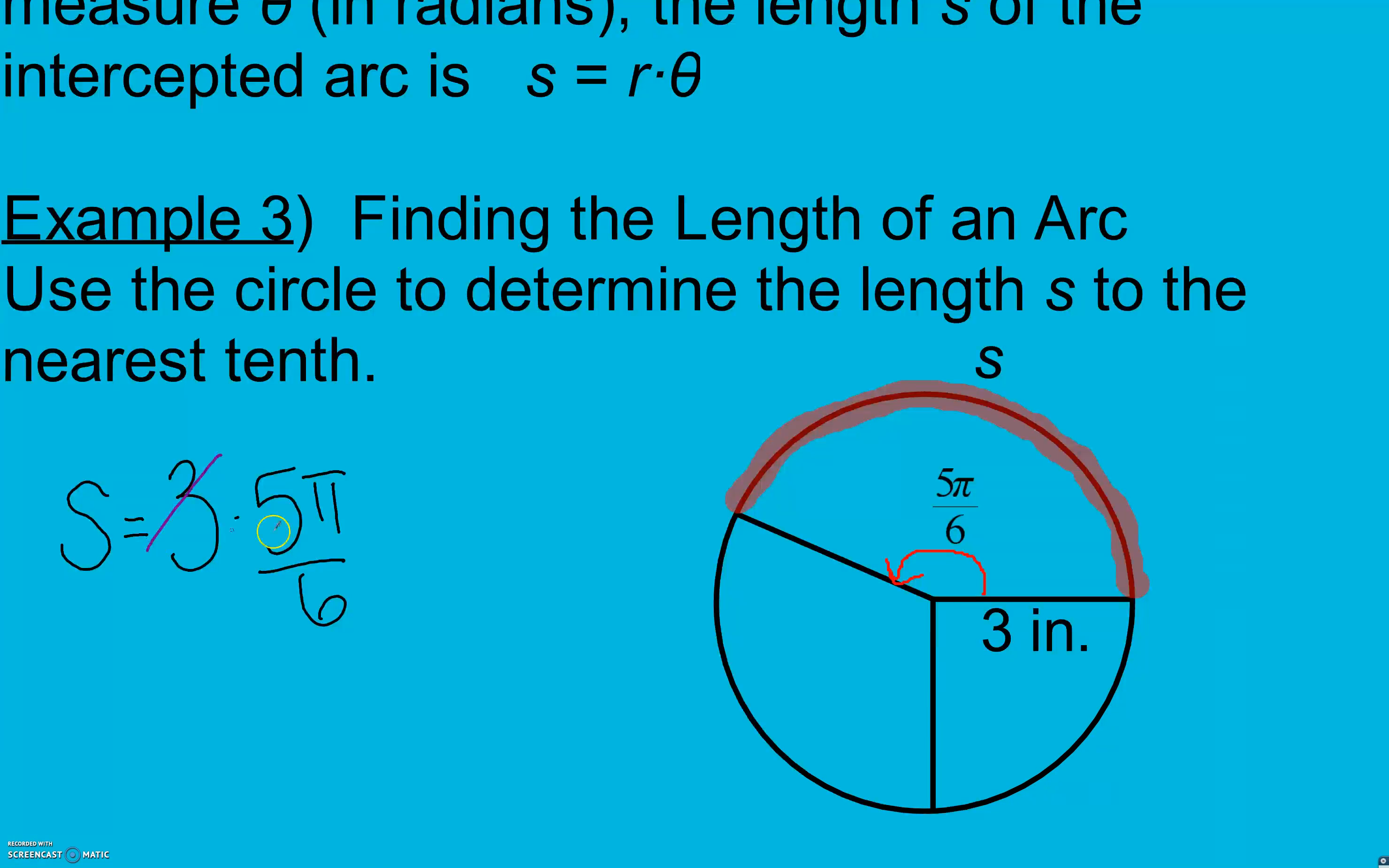I'm going to do a little simplifying here. We're going to get 5π over 2, which isn't super helpful. So I'm going to go ahead and take 5π divided by 2, and that's approximately 7.85.